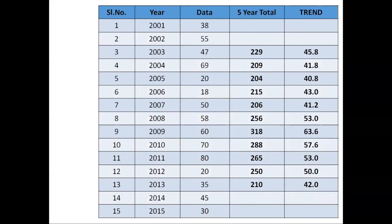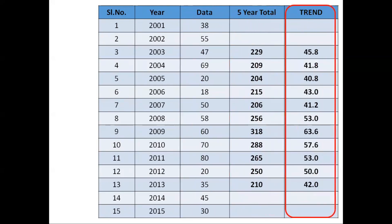Now we are left with drawing the graph. To draw the graph we need the data and the trend value — we are not plotting anything from the five-year total column. In this graph we are going to consider the year value, the data value, and the trend value. Let us see how the graph appears and what we can deduce from it.